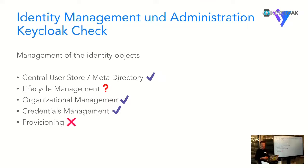Another question: Keycloak doesn't distinguish between identity and account. In enterprise access management, identities are managed - the person living within the company's lifecycle - but a person has several accounts, like a regular account and an underscore admin account. So one might say Keycloak can't truly fulfill the central identity store requirement in a perfect way because it's only an account store. Response: I would say it's an identity store because we have a one-to-one mapping in Keycloak from one identity to one account, which fulfills this requirement.